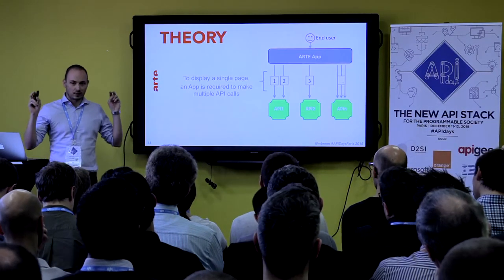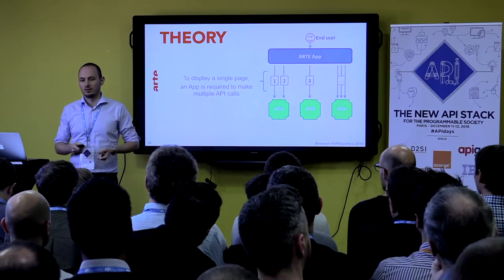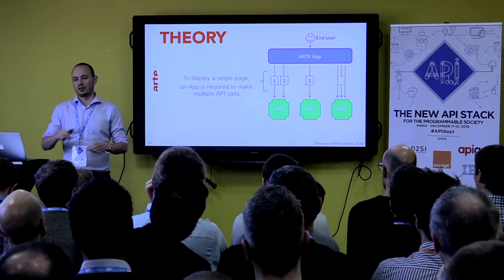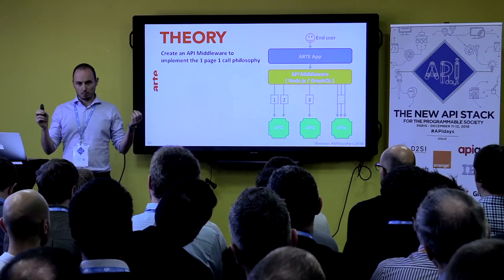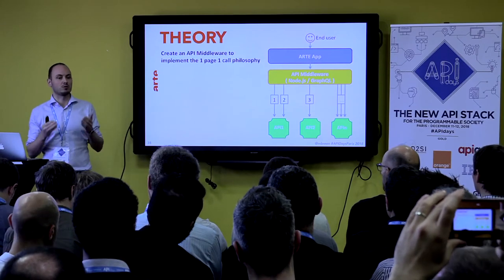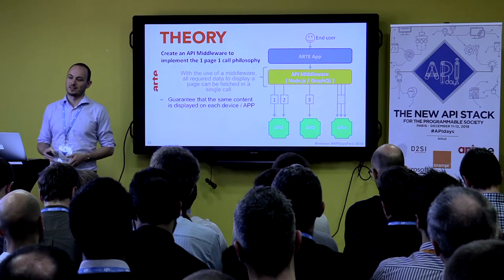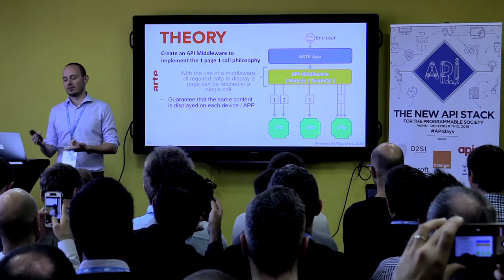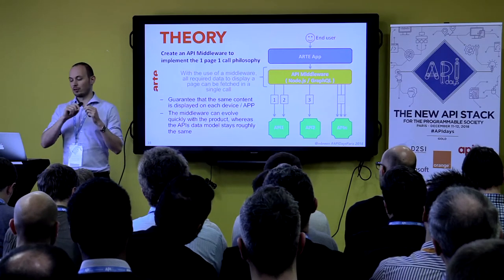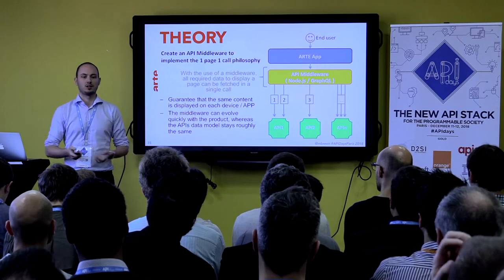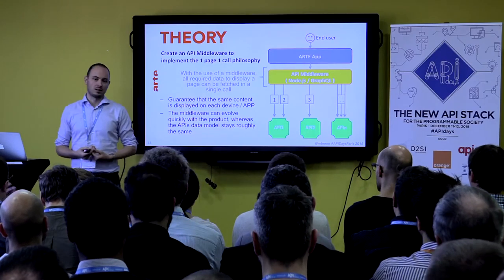What can we improve in a third iteration? To display a single page, an app had to make 10, 15, or 20 API calls — this was slow and prone to error. The idea would be to create a middleware that would combine all those calls in a philosophy of one page, one call. This would guarantee that we display the same content on all devices — the most viewed videos on our website would be the same as on our apps. The middleware can evolve very quickly with your front-end needs, while your core API with your data model doesn't change that often.